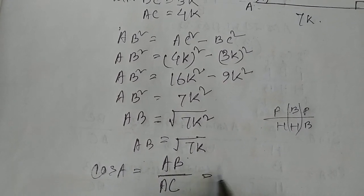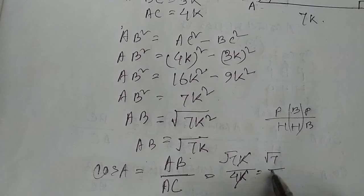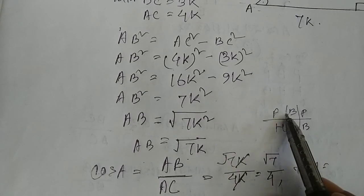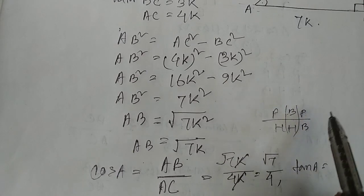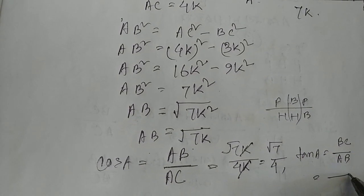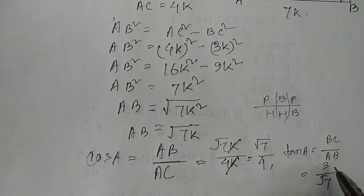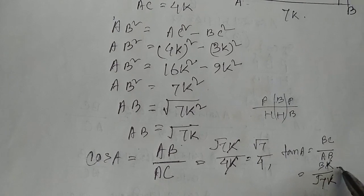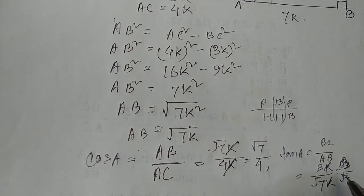AB is root 7k. How much is it? It is root 7k by 4k. And tan A, which is P by B, is BC by AB — that is 3k by root 7k, which gives 3 by root 7.